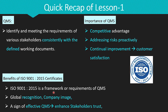ISO 9001:2015 is a framework of requirements for meeting the needs of our stakeholders consistently. To ensure the proper implementation of ISO 9001:2015, our organization must undertake an assessment by ISO auditors and obtain certification — a confirmation that proves effective implementation of the quality management system. Obtaining the ISO certificate also enhances global recognition and reinforces stakeholder trust for our organization.